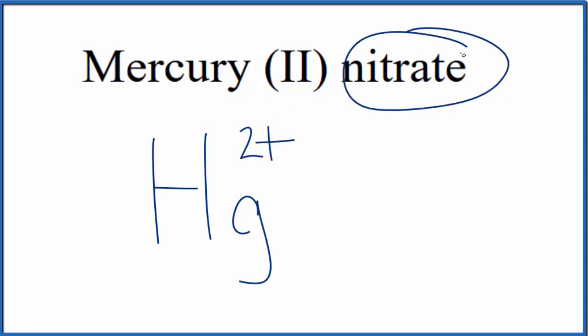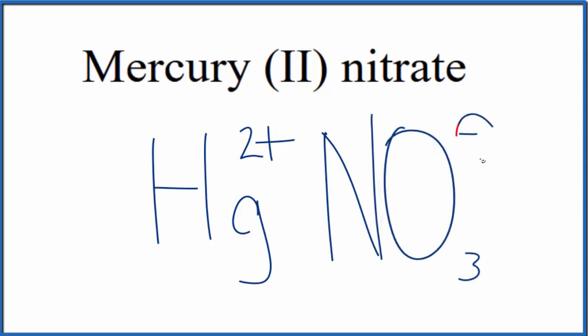For the nitrate, when you see ATE, you're not going to find that on the periodic table. You'll have to look at a table of polyatomic ions if you're allowed, or memorize that the nitrate ion is NO3-. And the minus charge here applies to the whole nitrate ion.